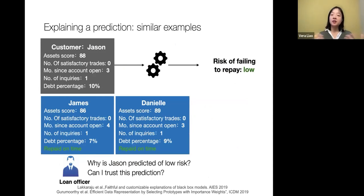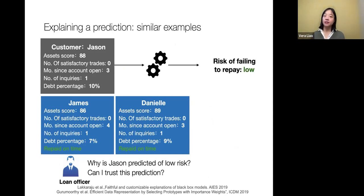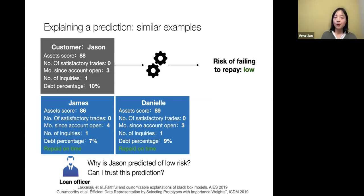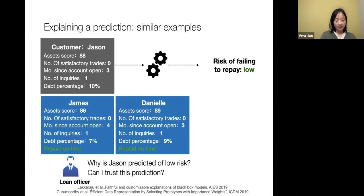Besides feature-based explanation, another popular category is explanation by examples — supporting case-based reasoning. Instead of telling you the weights of how Jason's profile contributes to a decision, this kind of algorithm can generate examples. For instance, it finds from the training data two existing customers with profiles very similar to Jason, both of whom repaid on time — giving this kind of justification, which many people find easier to consume.